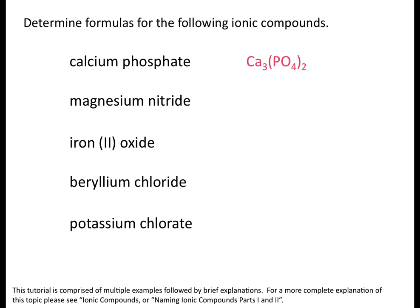A common method is the swap-and-drop, where you take the charge on the cation and use it as the subscript on the anion, and vice versa. That's a valid method, but if you have a polyatomic ion, make sure you don't change its formula. Put the 2 on the outside of the parentheses for the PO4 group — don't write Ca3PO2. The formulas of polyatomic ions don't change, so keep PO4 intact and put the subscript 2 outside the parentheses.